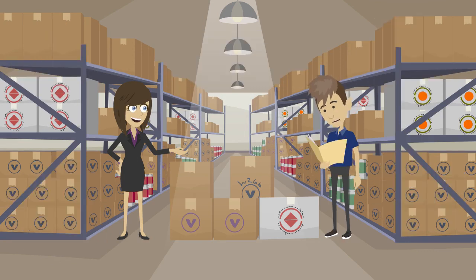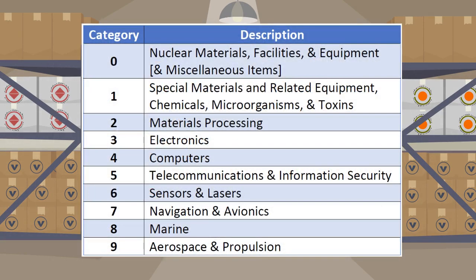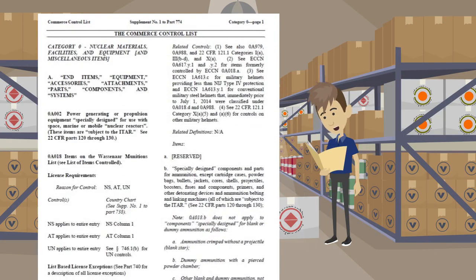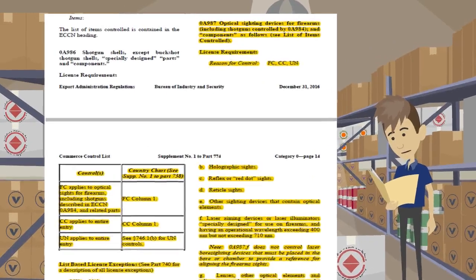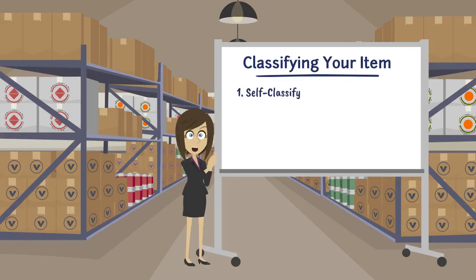I also have this cool optical sight I want to send to my uncle in Canada. On first glance, I don't see any categories that look right. If the optical sight is subject to the EAR, take a look at Category 0 — that includes miscellaneous items too. Looks like it would be in Product Group A. Here it is: 0A987. Well done! Now you know the basics of how to self-classify an item.